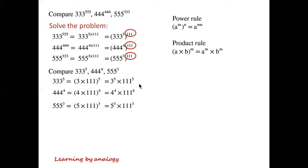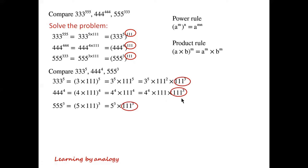We can see that there's a common factor of 111 to the power of 3. We can write the first number as 3 to the power of 5 times 111 squared times 111 cubed, and the second number as 4 to the power of 4 times 111 times 111 cubed. So now we can compare the numbers by comparing 3 to the power of 5 times 111 squared, and 4 to the power of 4 times 111, and 5 cubed.